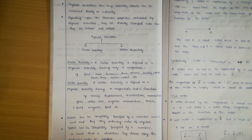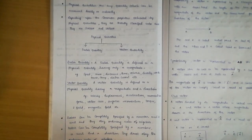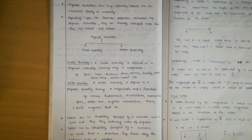Velocity is a vector quantity. Speed has only magnitude with no direction, whereas velocity has both magnitude and direction — for example, a number of kilometres per hour in a specific direction. Similarly, distance only says how far a body has moved, while displacement also explains in which direction that body moves.